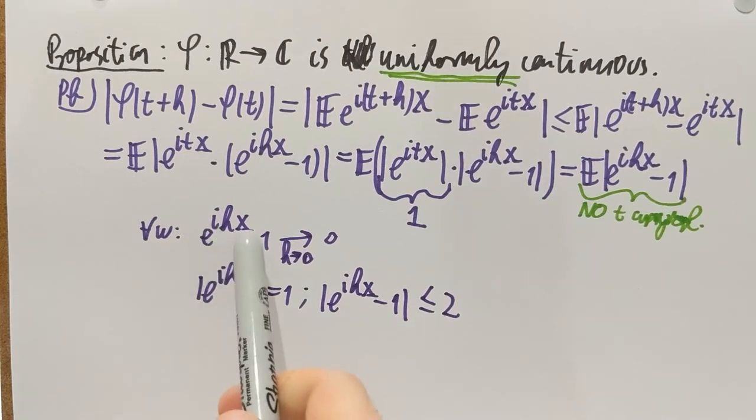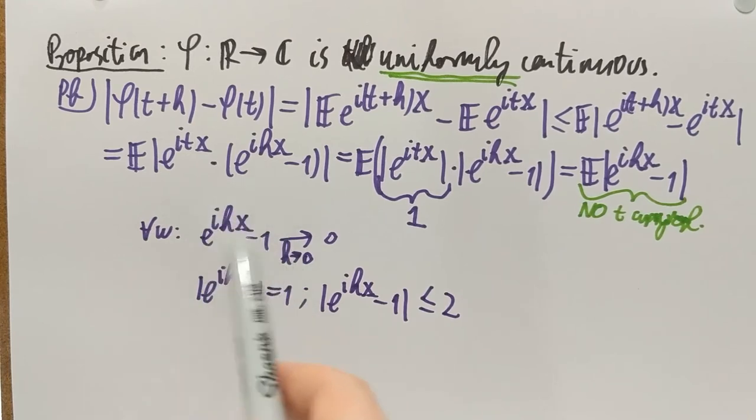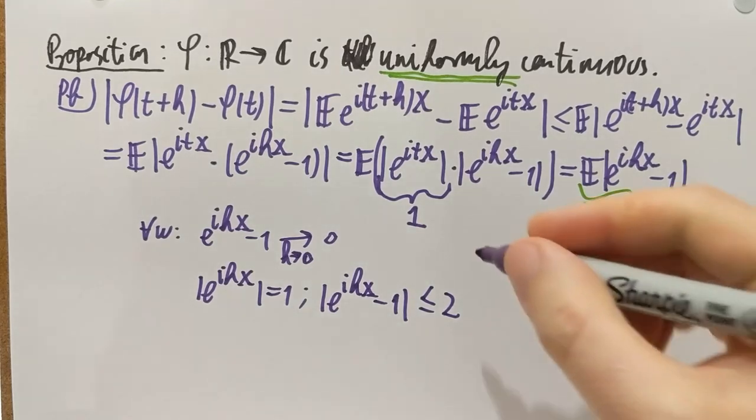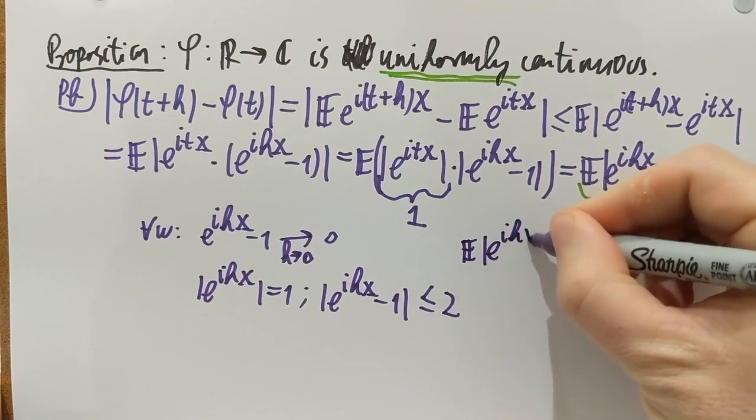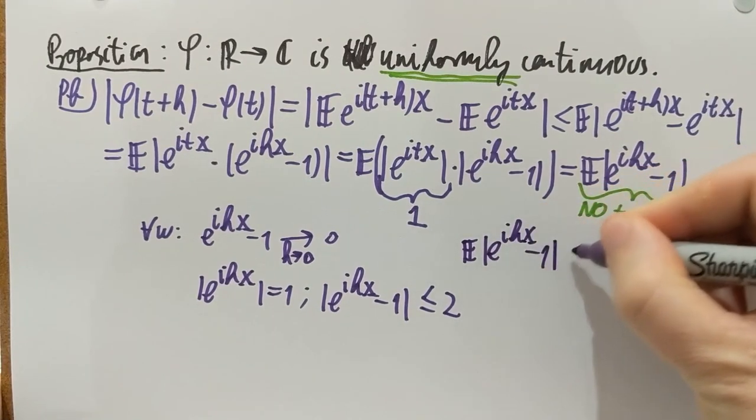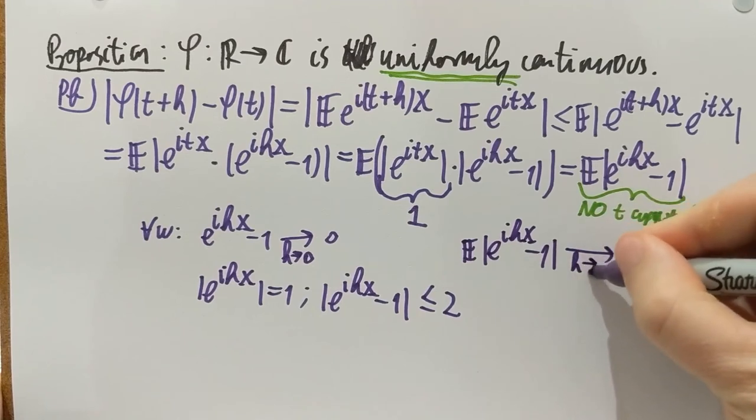So, I have a sequence of random variables considered as a sequence in h, depending on h. This sequence goes to 0, this sequence is uniformly bounded by 2, so I can apply bounded convergence and conclude that expectation of e to the i·h·x minus 1 also goes to 0 as h goes to 0.